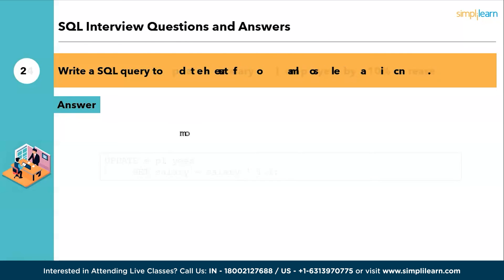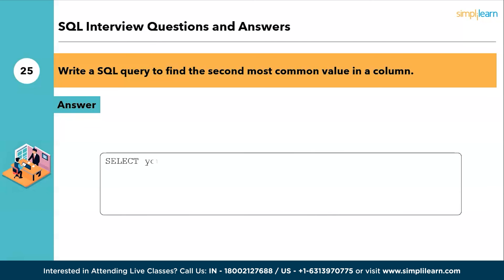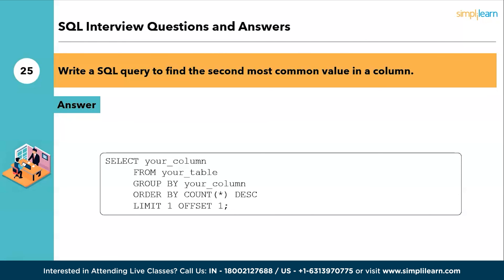The twenty-fifth question: write a SQL query to find the second most common value in a column. The answer is: SELECT your_column FROM your_table GROUP BY your_column ORDER BY COUNT(*) DESC LIMIT 1 OFFSET 1. These questions test your ability to construct SQL queries for common tasks including data retrieval, aggregation, updating records, and working with ordering and limiting results.